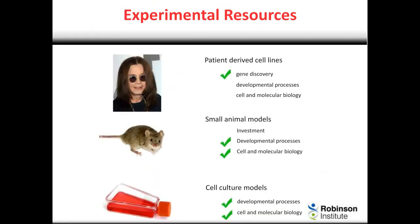This comes from just looking at the resources we have available. Stem cells are really helpful. Patient-derived cell lines are a great — an endless — source of DNA, whether they be fibroblasts or blood cell lines that help us with gene discovery. But they're very poor at modelling developmental processes going on in the brain.